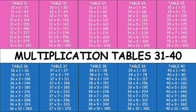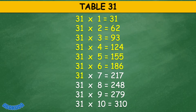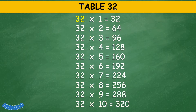Abacada Multiplication Tables 31 to 40. Table 31: 31 times 1 equals 31, 31 times 2 equals 62, 31 times 3 equals 93, 31 times 4 equals 124, 31 times 5 equals 155, 31 times 6 equals 186, 31 times 7 equals 217, 31 times 8 equals 248, 31 times 9 equals 279, 31 times 10 equals 310.